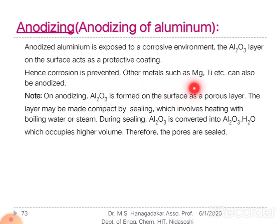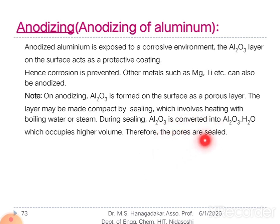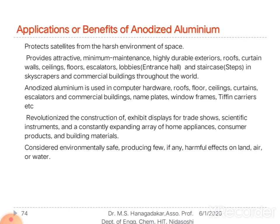Other metals such as magnesium and titanium are also anodized. Note that on anodizing, aluminium oxide forms on the surface. The layer must be compactly sealed by dipping the article in boiling water or steam. During sealing, aluminium oxide is converted to hydrated aluminium oxide, which occupies a higher volume, thereby sealing the pores and forming a firm coating over the aluminium oxide, which provides protection.